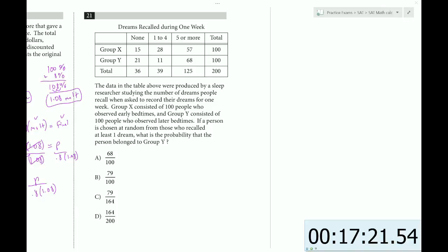The data in the table above were produced by a sleep researcher studying the number of dreams people recall when asked to record their dreams for one week. Group X consisted of 100 people who observed early bedtimes, and group Y consisted of 100 people who observed later bedtimes.